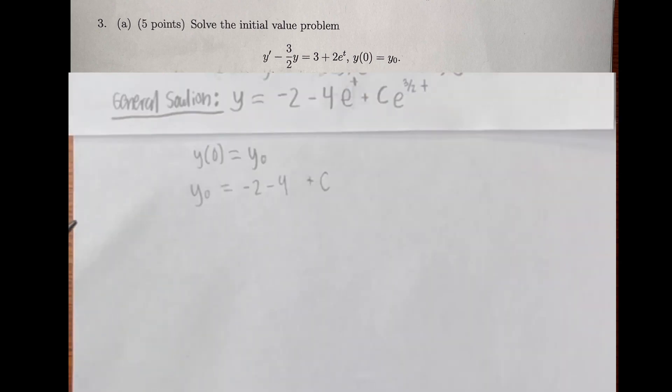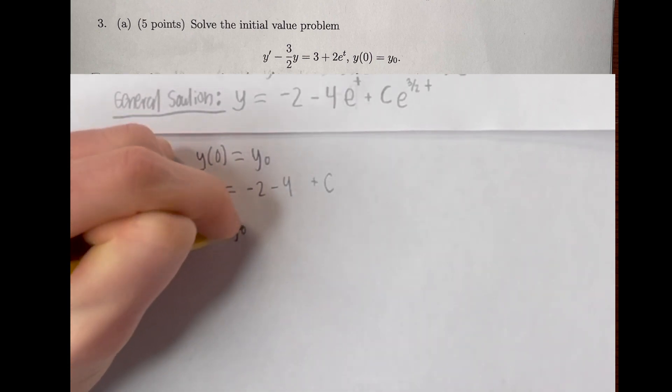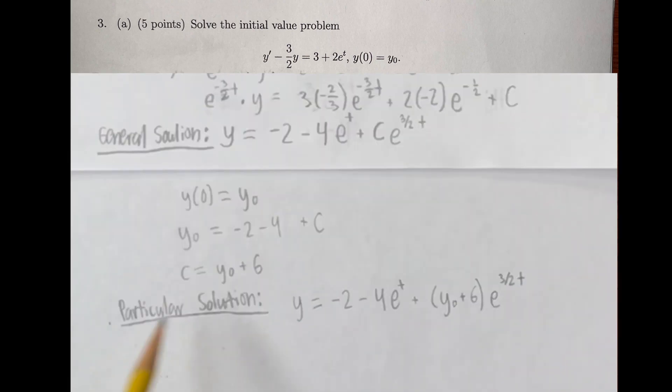Now to find the particular solution of the problem, we use the initial condition given, y(0) = y₀, and we substitute in y₀ for y and zero for t. We get -6 + C = y₀. Therefore, C = y₀ + 6. We substitute y₀ + 6 for C into the general solution to find the particular solution. And that's the answer to the problem.